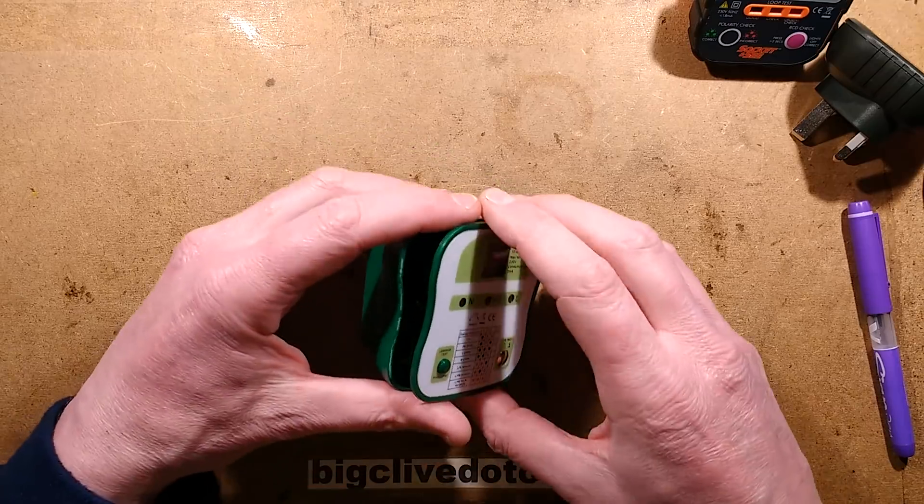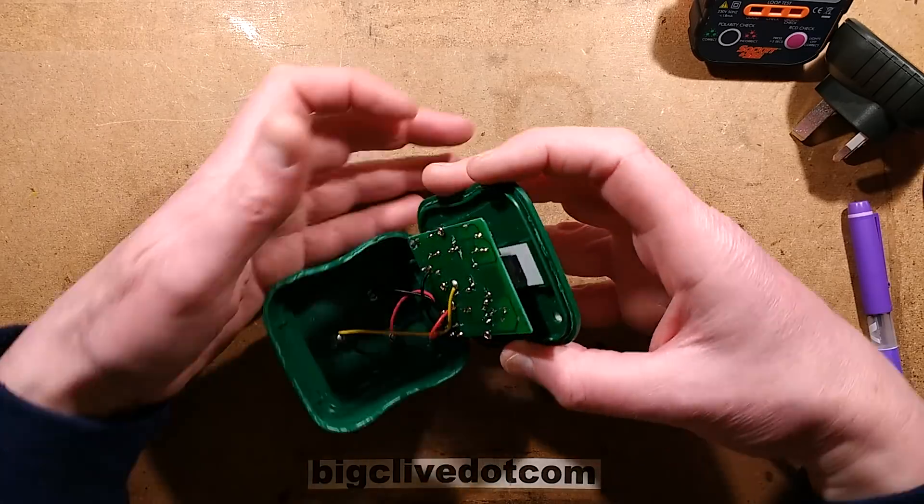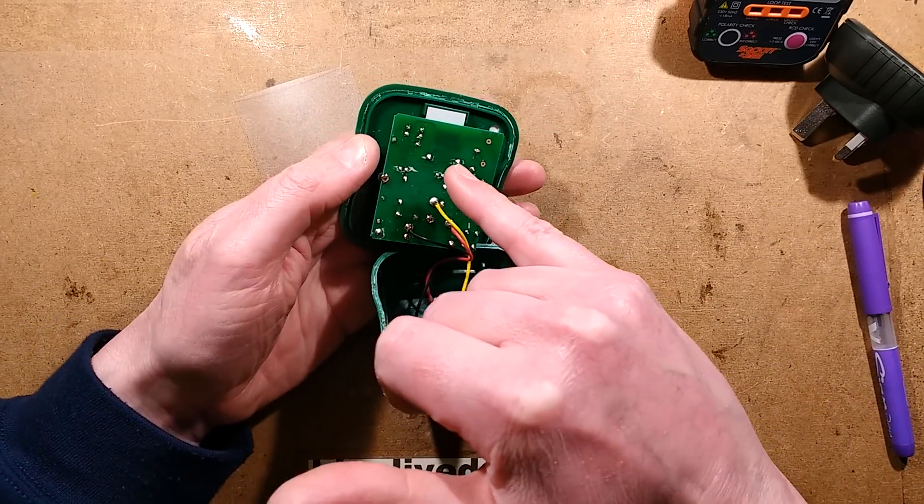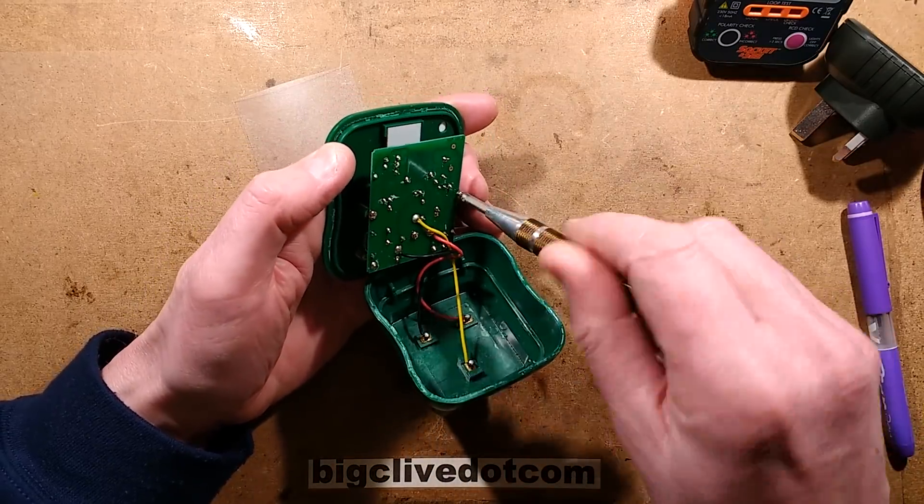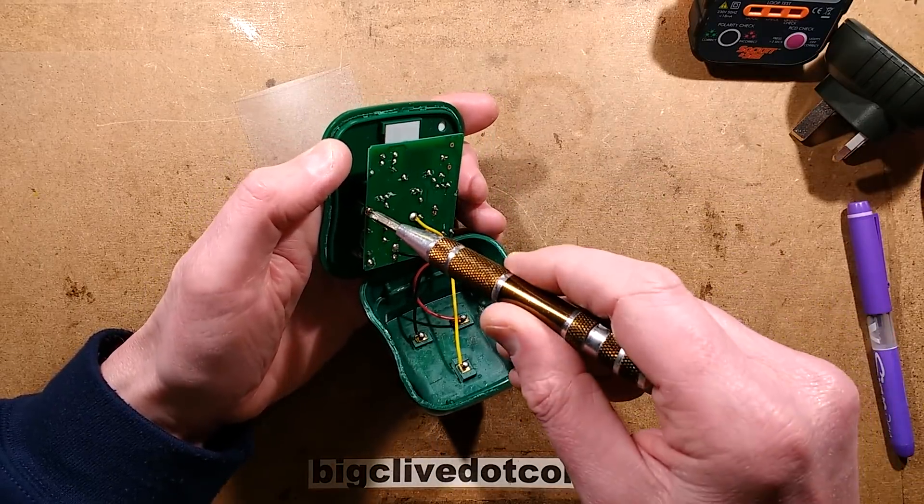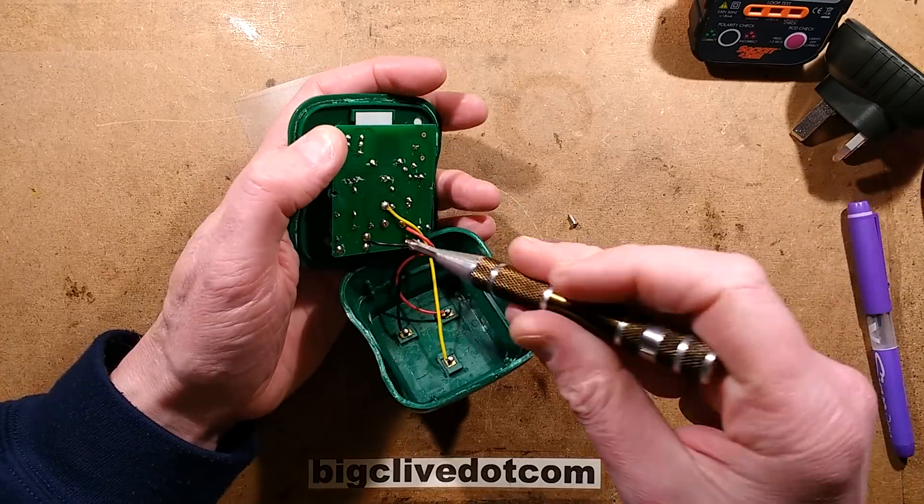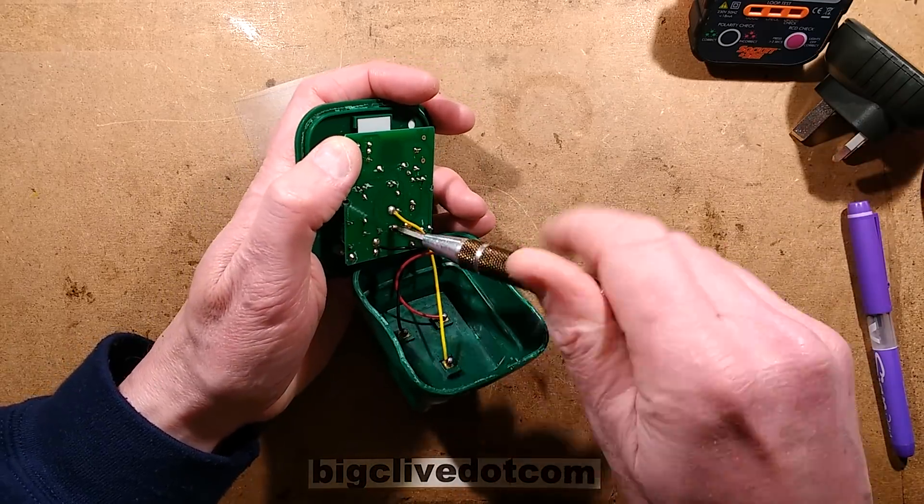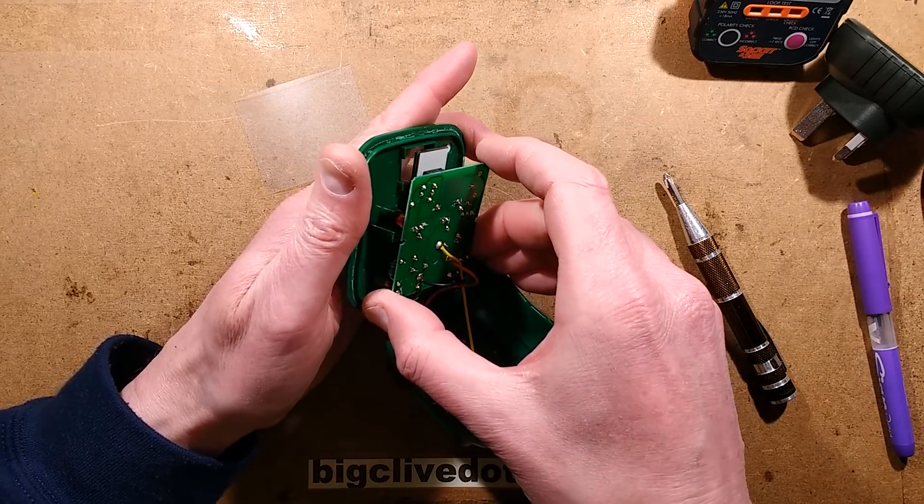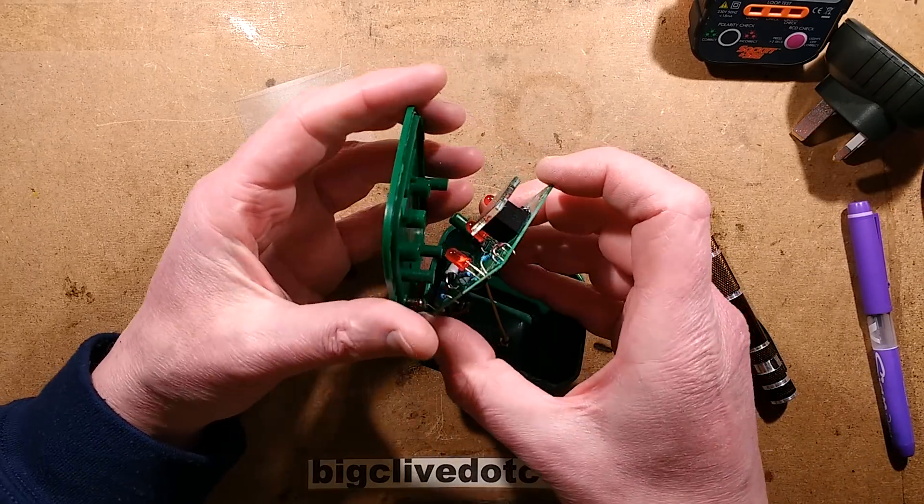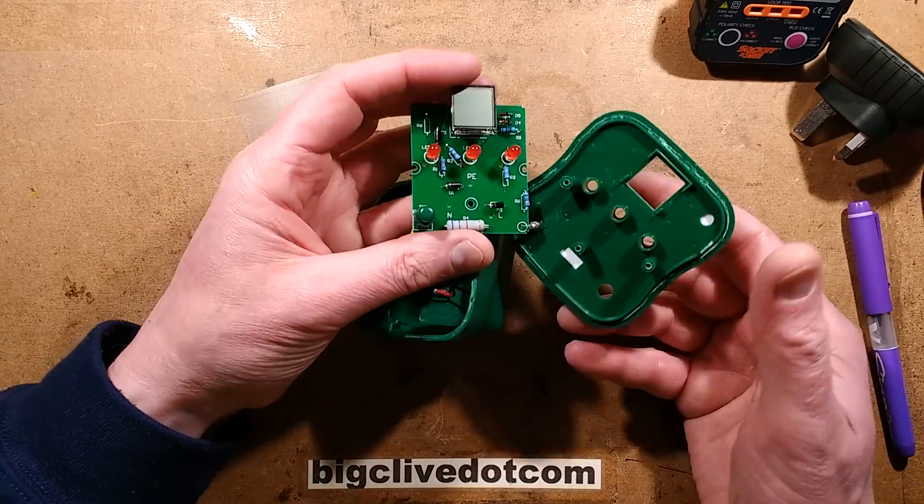So inside, Adrian had already opened it to explore before he sent it. That's when he discovered the LCD only had two connections, which is a bit of a clue. So let's take a look at this. Three screws hold this together. I can kind of guess what this is already. The earth leakage test will simply connect a resistor between live and earth.